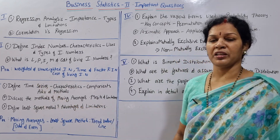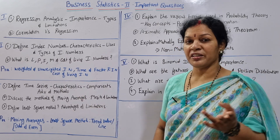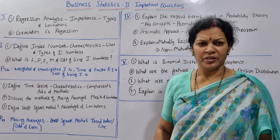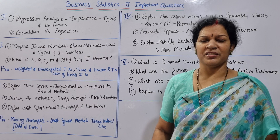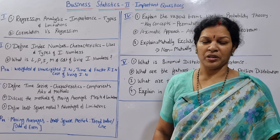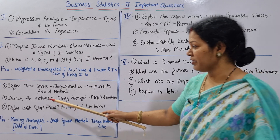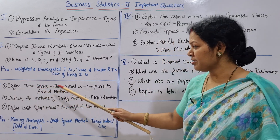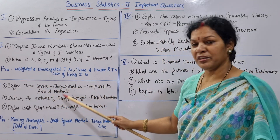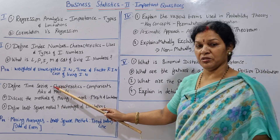After the second unit, we have the third unit: Moving Averages and Time Series. This is damn easy — full score potential. In this third unit, the first question is: Define Time Series. What are the characteristics, components, advantages, and methods of time series? This is one key question.